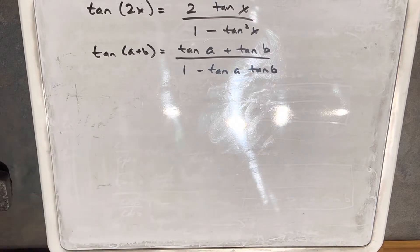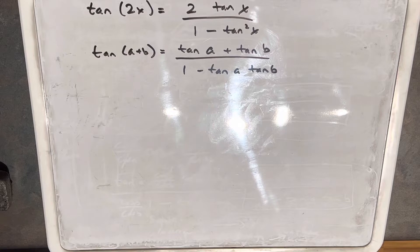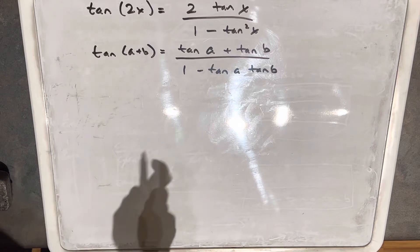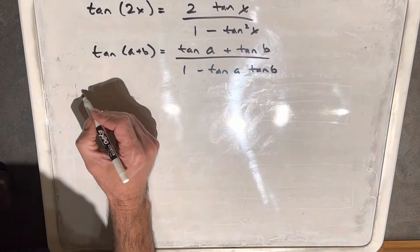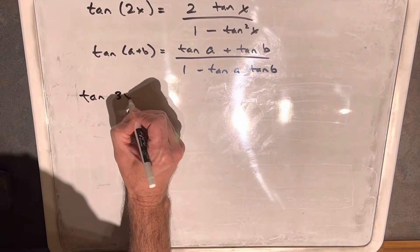I have on the board here the double angle formula for tangent — tangent of 2x — and the sum of angle formula for tangent. What I want to do is derive the triple angle formula for tangent.